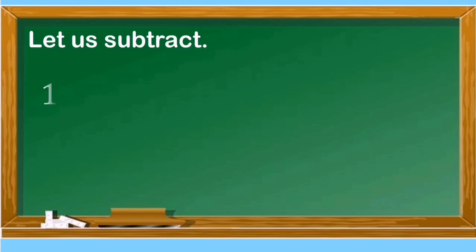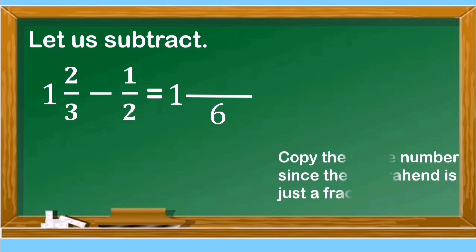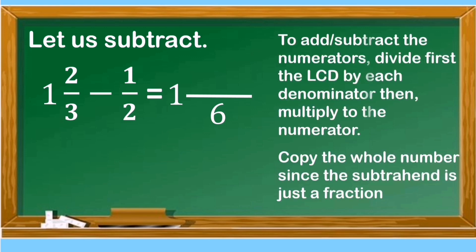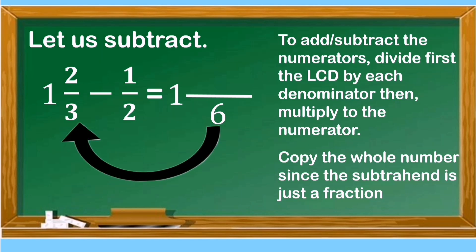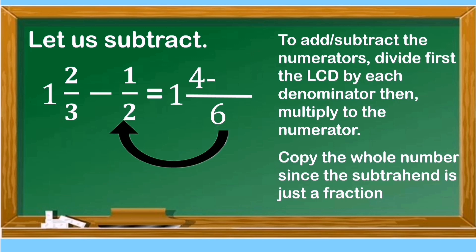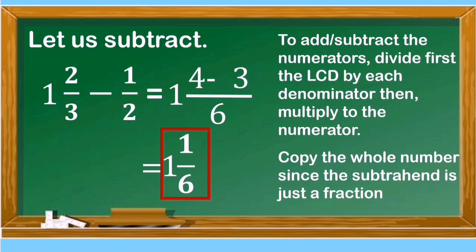Let us subtract. We will write the LCD which is 6 and copy the whole number since the subtrahend is just a fraction. Then we will proceed by dividing the LCD by each denominator, then multiply to the numerator. 6 divided by 3 is equal to 2 times 2 is 4. 6 divided by 2 is 3 times 1 is equal to 3. Let us subtract 4 and 3. 4 minus 3 is 1. Copy the whole number 1. And the difference between 1 and 2/3 and 1/2 is 1 and 1/6.